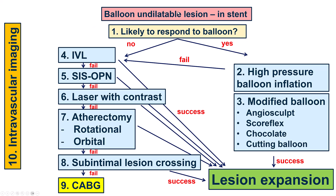So what do we do? This is an in-stent balloon undilatable lesion. The first step, which we already did, is to try high-pressure non-compliant balloon inflation — that did not work. Another option would be to try a plaque modification balloon like the AngioSculpt, Scoreflex, Chocolate, or Cutting Balloon. Or go to intravascular lithotripsy, although IVL is not formally approved for this indication. If that doesn't work, we can escalate to the very high-pressure OPN balloon, which can go up to 40 or 50 atmospheres. If it doesn't work, we can do laser with contrast. Then there's the option of atherectomy within the prior stent, which is a high-risk procedure. Or if everything fails, go outside the previous stent, crush the stent, and then stent again. And if all of this fails, coronary bypass may be another way to take care of the problem.